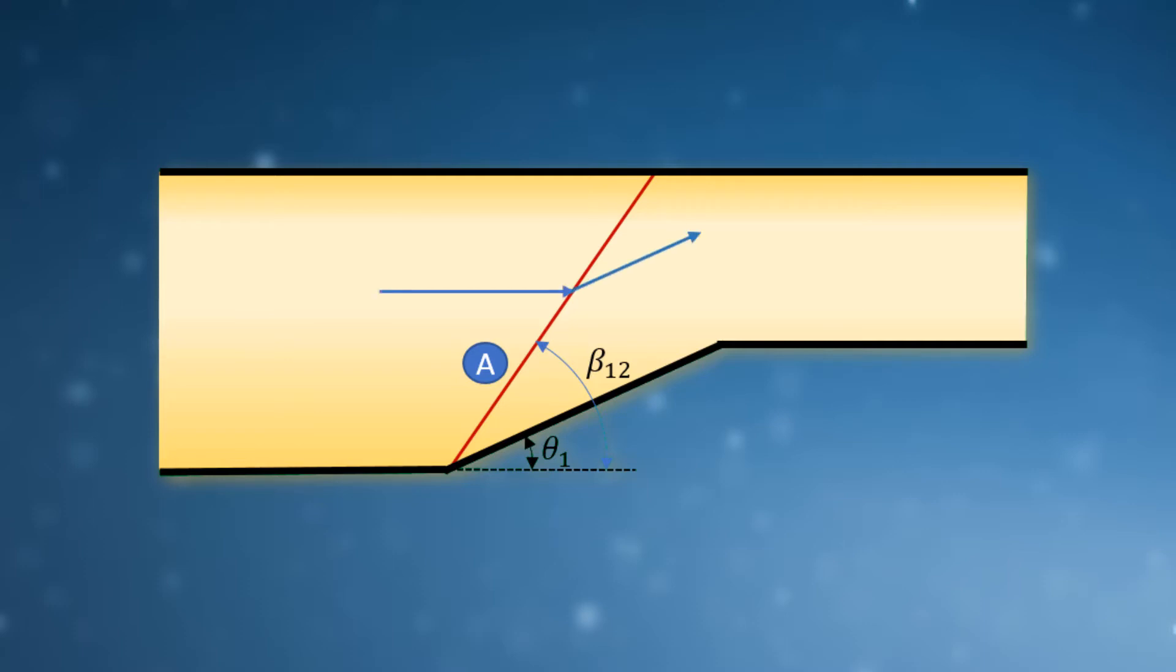From the point of view of the fluid, the upper wall is at an angle theta 2. Hence, the oblique shock B is generated.